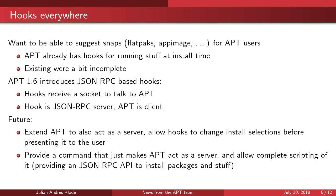So we introduced new hooks based on JSON-RPC. These hooks get passed a socket where they act as a server, and then apt calls methods within the hooks using JSON-RPC, providing a lot of data related to the request. We can extend this in the future to allow apt to act as a server and have bi-directional communication. For example, if you have apt listing bugs, instead of adding a pin, you could block upgrades for release critical bugs directly, so the user wouldn't see the update and it would be held back.